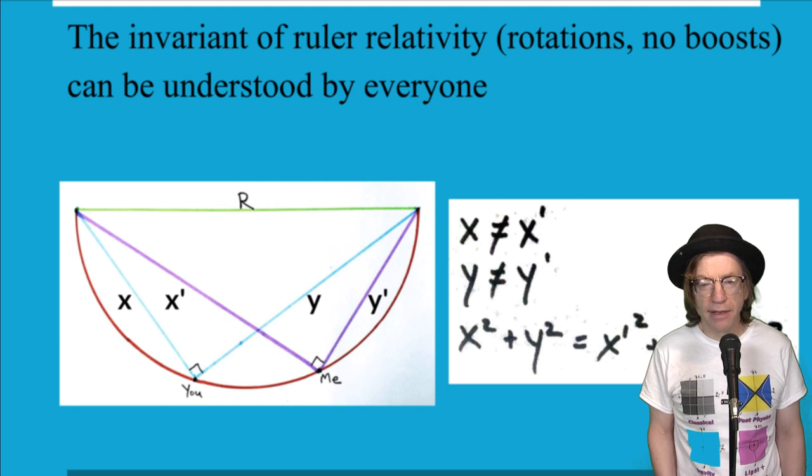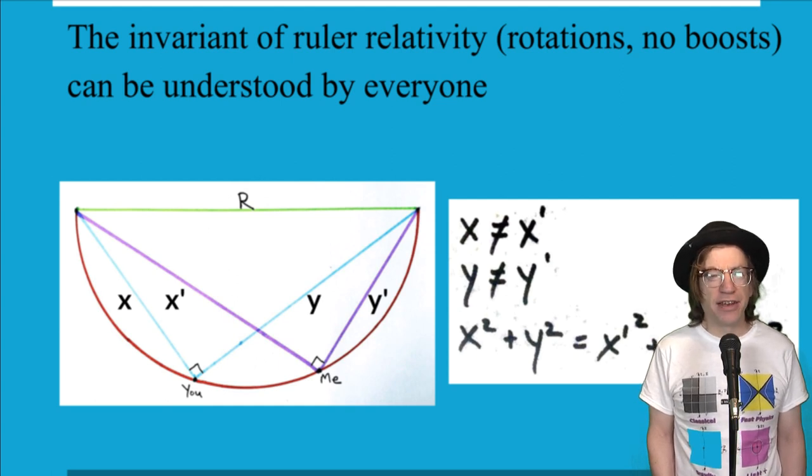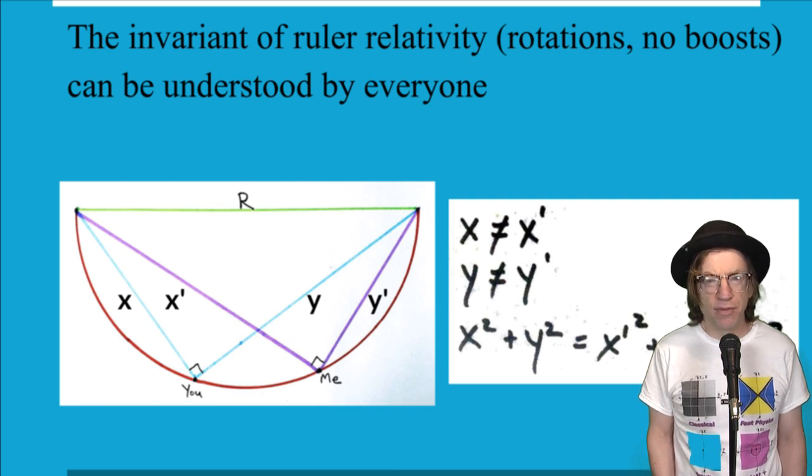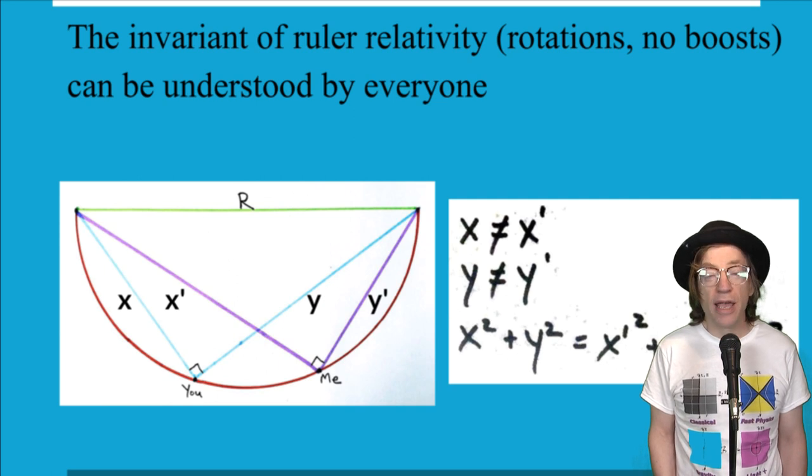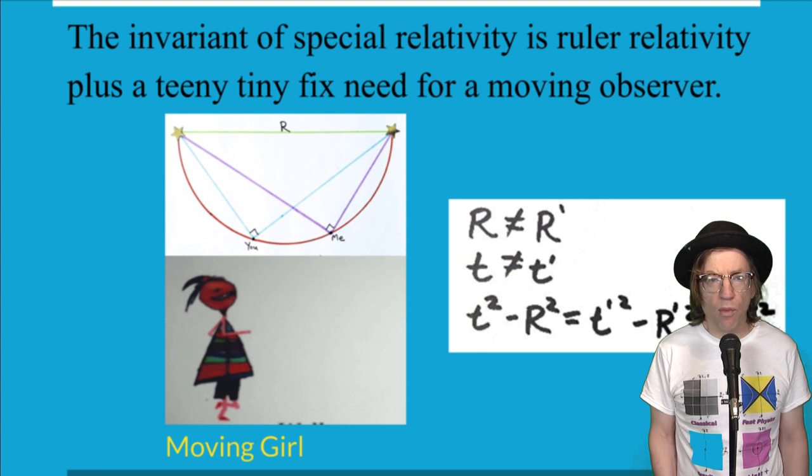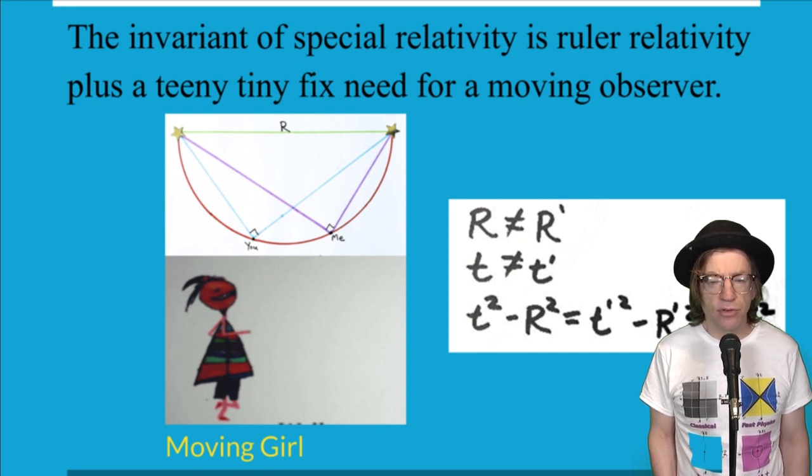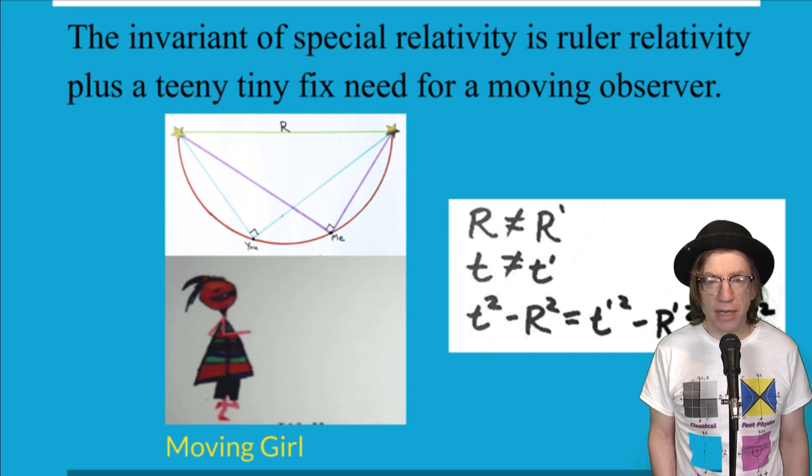What is relativity? Well, I like to work with ruler relativity first, where you're just doing with rotations, not boosts. And I think everyone can understand it. You're talking about the same thing from two different perspectives. There's you and me. And we go and we measure the same thing. And we say, hey, your X is not my X. Your Y is not my Y. But the squares of those two is the same. So, what happens with special relativity? We take into account that the two people looking at exactly the same thing could be moving relative to each other. And then we need just a minor tweak to find something that we agree on. Now, we agree not only on spatial measurements, but we disagree about measurements in time. But this invariant, Lorentz invariant, T squared minus R squared, that's what we can agree to.